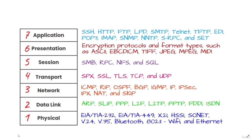The OSI model, or the Open Systems Interconnection model, is a conceptual framework used to describe the functions of a networking system. The OSI model characterizes computing functions into a universal set of rules and requirements in order to support interoperability between different products and software.